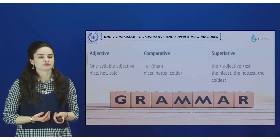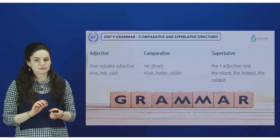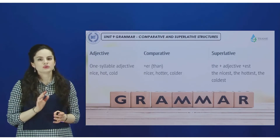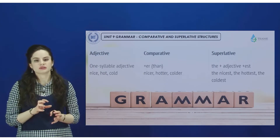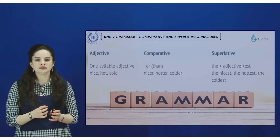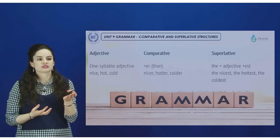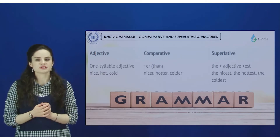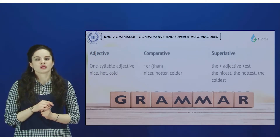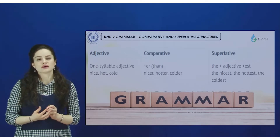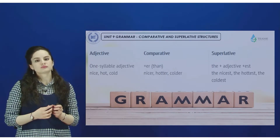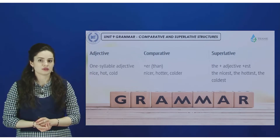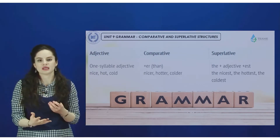If you take a simple adjective with one or two syllables, you should add the ending -er to create the comparative form. For example: nice → nicer, hot → hotter, cold → colder. Pay attention that in some words, to simplify pronunciation, one letter may be doubled — like the T in 'hotter' — for easier pronunciation.